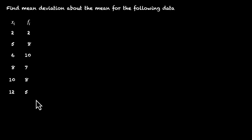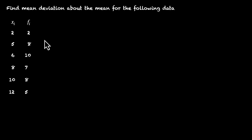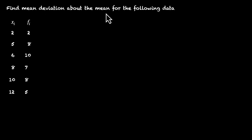Now pause the video and try this on your own first. Let's do this together. We have Xi values 2, 5, 6, 8, 10, and 12 with their corresponding frequencies. In this data set, 2 appears twice, 5 appears 8 times, 6 appears 10 times, and so on. We have to find the mean deviation about the mean, so the first step is to figure out what the mean is.